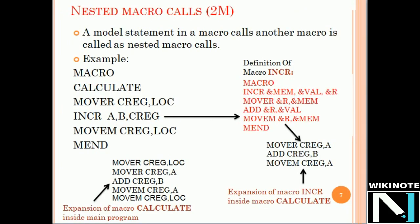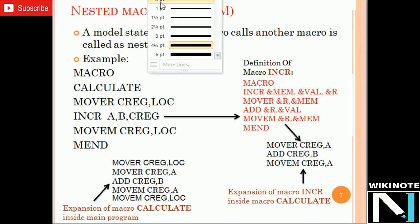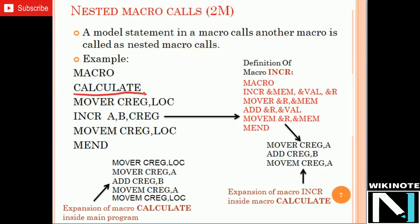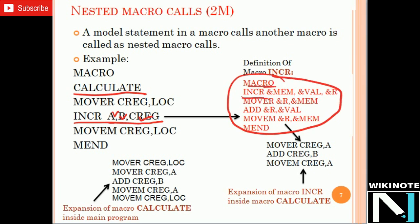Now we will see the nesting of macros. When a model statement inside a macro calls another macro, that is called nesting of macros. I have a first macro named CALCULATE. This CALCULATE macro has its model statements, and inside the model statements we can see another macro being called — named INCR, which we already covered. I am passing three actual parameters: A, B, and C_reg. The INCR macro definition — with its keyword, name, parameters, model statements, and MEND — is used to expand by replacing formal parameters with actual parameters.